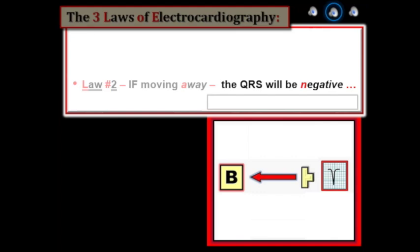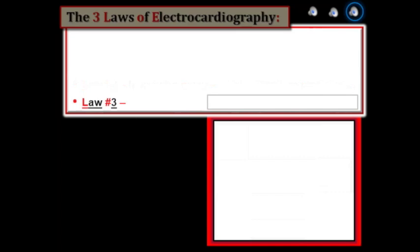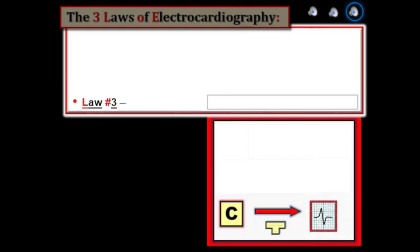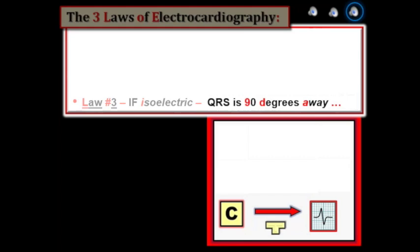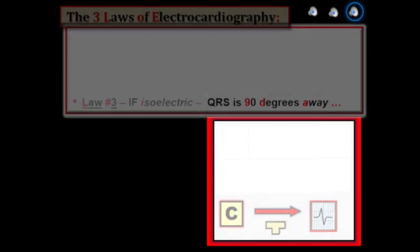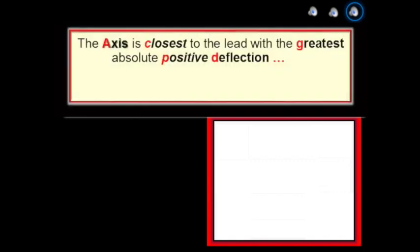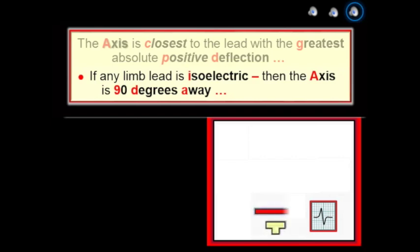Conditions such as RVH or lead misplacement may alter the direction of electrical activity with respect to lead aVR, in which case aVR may be positive. Law number three states that if the recording electrode is positioned perpendicular — at 90 degrees — to the direction of the wave of depolarization, then an isoelectric or equiphasic complex with equal parts up and down will be written. The mean QRS axis is closest to that lead which manifests the greatest absolute positive deflection, and if any limb lead is isoelectric, the axis will be approximately 90 degrees away from that lead.